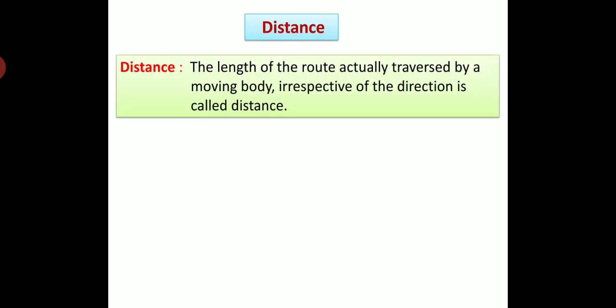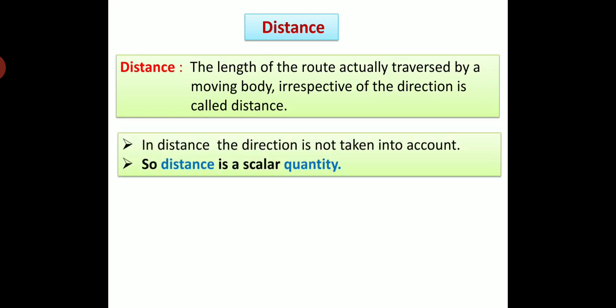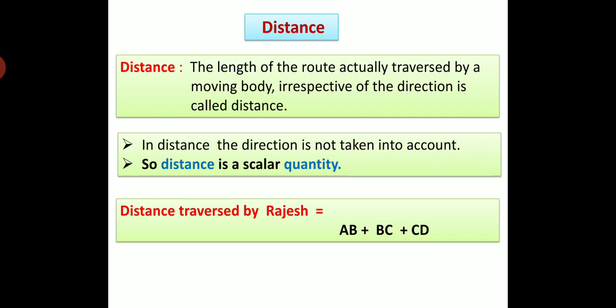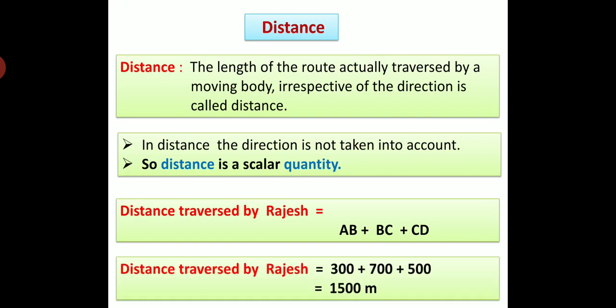Distance: The length of the route actually traversed by a moving body, irrespective of the direction, is called distance. In distance, the direction is not taken into account. So, distance is a scalar quantity. Distance traversed by Rajesh is equal to AB plus BC plus CD, which is 1500 meter.